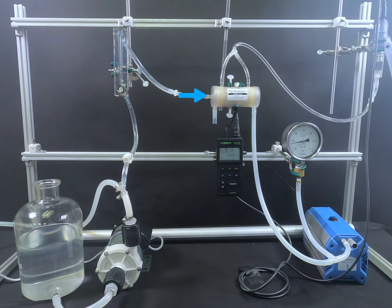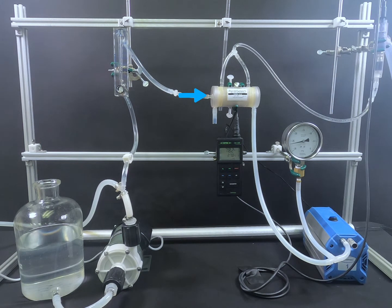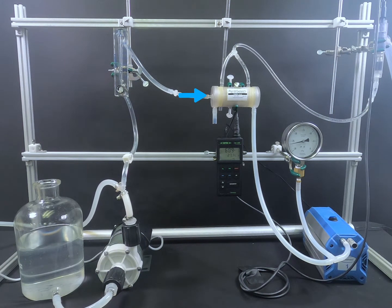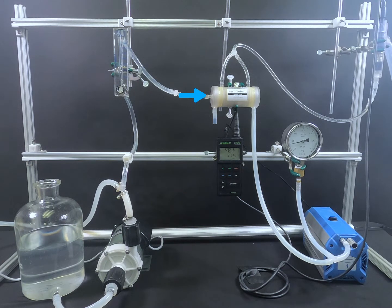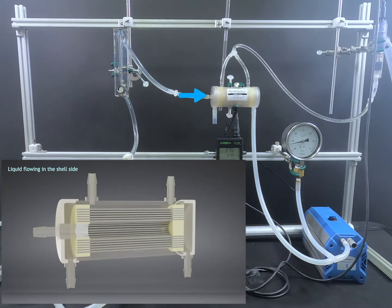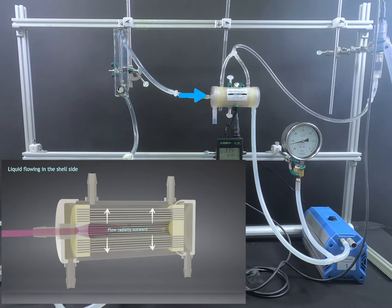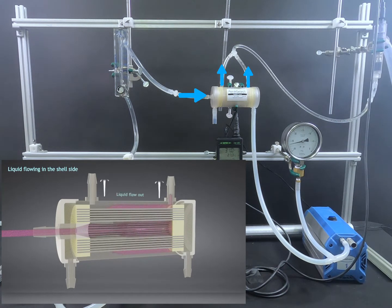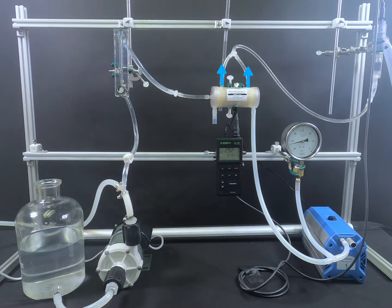As the water flows into the membrane module through the shell side, it enters the liquid in port and the water flows radially outward across the bundle of hollow fibers contacting one meter squared of our membrane surface and exits through the two liquid out ports on the top of the module.